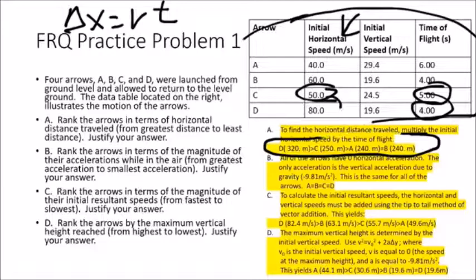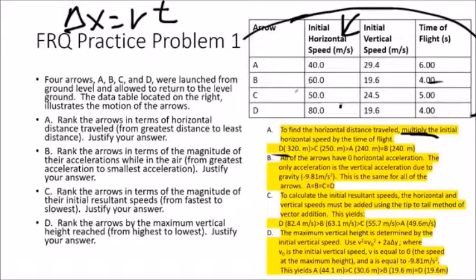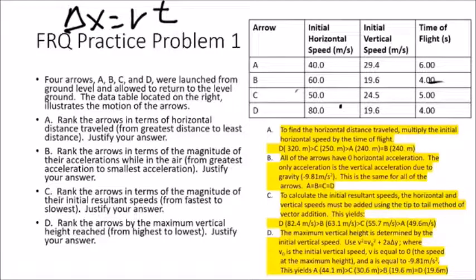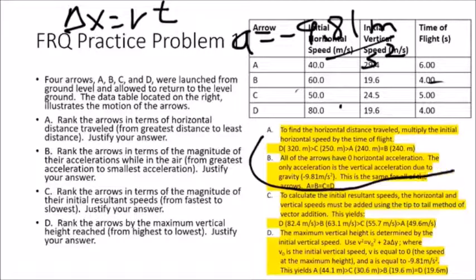Part B ranks arrows by the magnitudes of their accelerations while in the air. During a projectile problem, the only acceleration is vertical, caused by gravity — negative 9.81 meters per second squared. This is the same for all arrows regardless of initial speed or direction. All arrows have zero horizontal acceleration. Therefore A equals B equals C equals D.